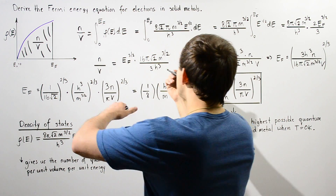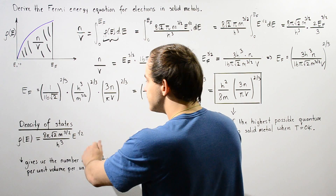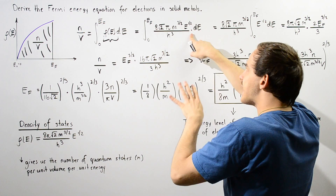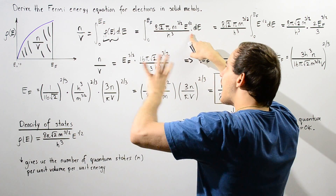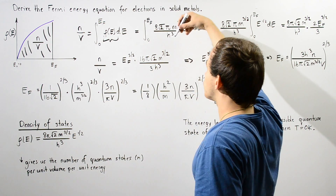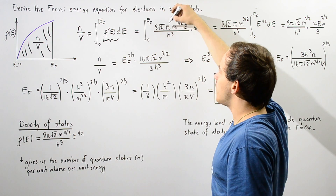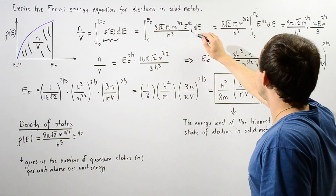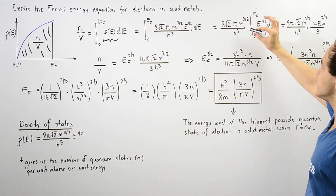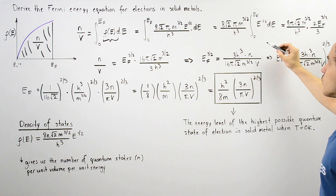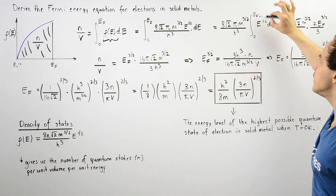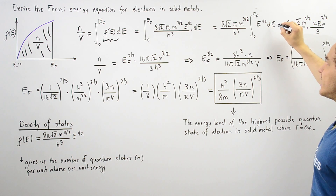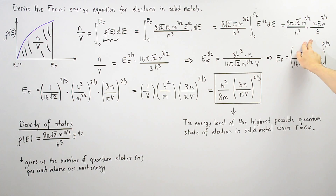We take the integral from our lower to upper bound of the density of states function with respect to dE. The per unit energy term cancels out because we're essentially multiplying by our energy term. We replace the function with its full equation, bring constant values outside the integral — the 8, the radical pi, Planck's constant, and m the mass of the electron — and integrate from zero to the Fermi energy level. Evaluating that integral gives us our result.